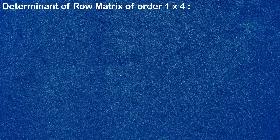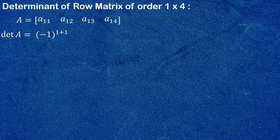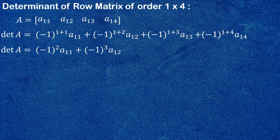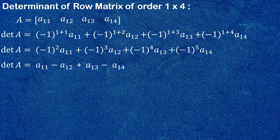Lastly, we find the determinant of a row matrix of order 1×4. In this video we have discussed only these three cases, but you can continue in this way to find determinants of matrices 1×5, 1×6, 1×7, up to 1×n. Let's take a 1×4 row matrix of this form: a₁₁, a₁₂, a₁₃, a₁₄. Its determinant is defined in the same manner as the previous, giving det(A) = a₁₁ − a₁₂ + a₁₃ − a₁₄.